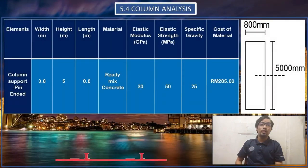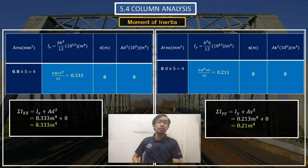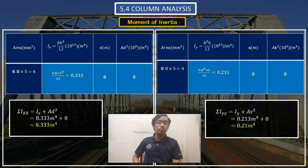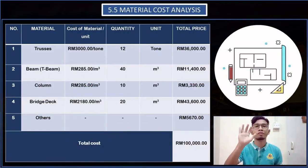Column analysis element: column support is pin-ended. The dimension for this column is 0.8m x 5m x 0.8m. For moment of inertia, the total Ixx on the left side is 8.333 m⁴, and the total Iyy on the right side is 0.213 m⁴. For the column design, we select the lowest moment of inertia value, which is 0.21 m⁴.